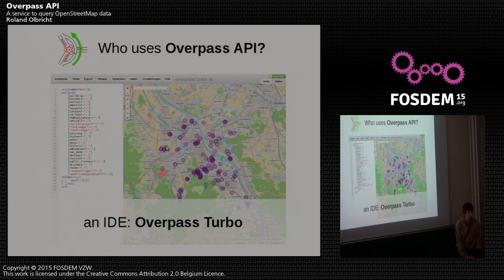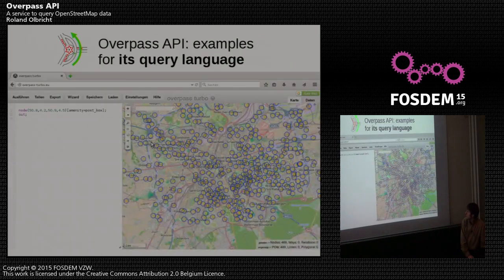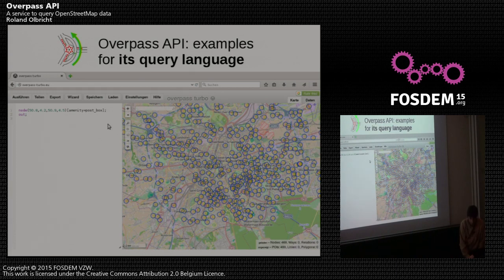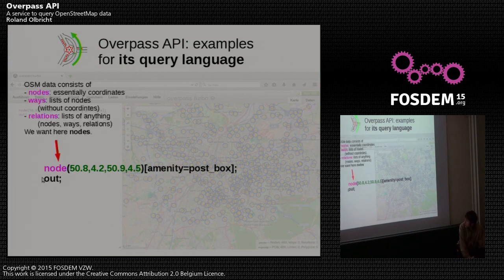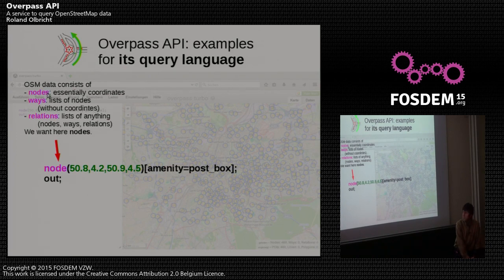To get you more involved in OpenStreetMap, I will conclude with some query examples. For example, we wanted to get all the post boxes in and around Brussels - that's just a two-liner. The first thing is the statement 'node'. OpenStreetMap data consists of three different types: nodes, which are essentially coordinates; ways, which are lists of nodes and which don't carry coordinates themselves; and relations.